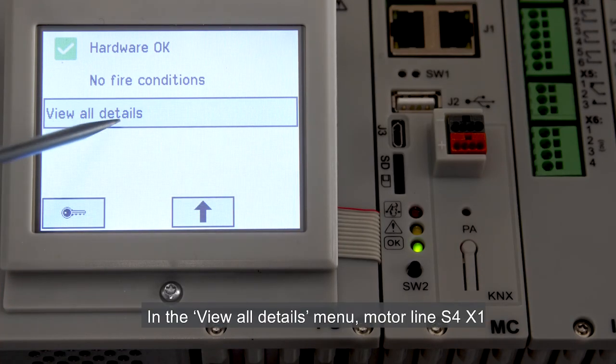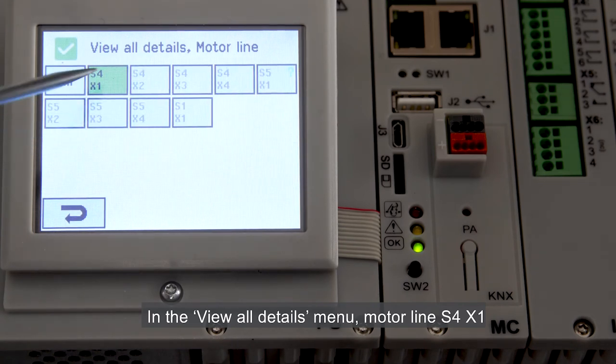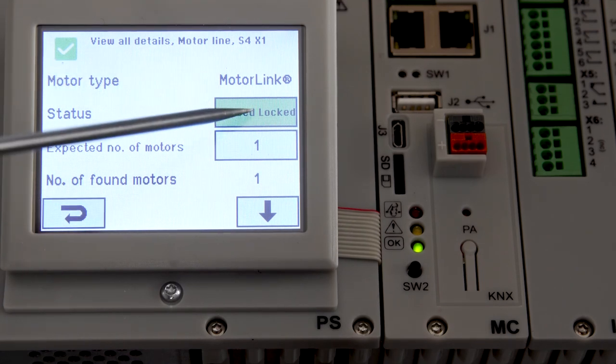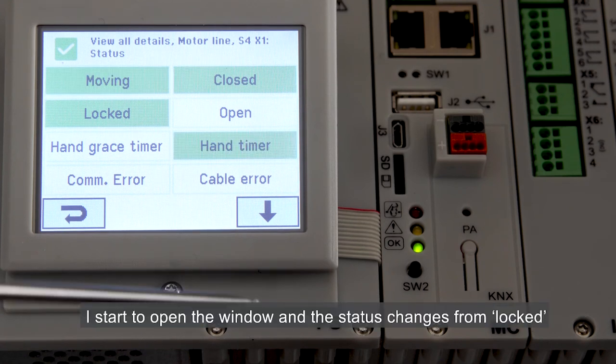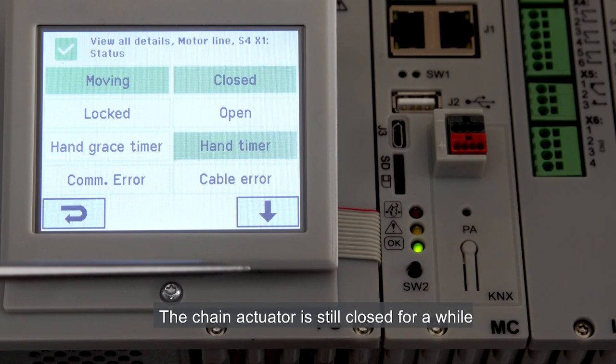In the View All Details menu, Motor Line S4X1, we can see the status of the motor line. Now we see that the window is closed and locked. I start to open the window and the status changes from locked to moving. The chain actuator is still closed for a while until the locking actuator reaches a fully open position.